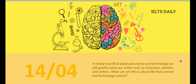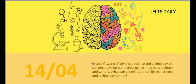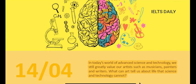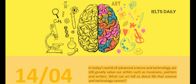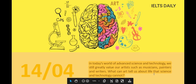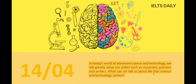Hello everyone, welcome to another episode of IELTS Writing Task 2. Today we are going to discuss a topic which came this year in April on the 14th. The topic is: 'In today's world of advanced science and technology, we still value our artists such as musicians, painters and writers. What can art tell us about life that science and technology cannot?' This is a tricky question because science and technology is changing the modern world, yet artists, writers and musicians are also valued greatly in society.